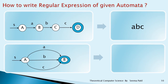Two states A and B with three input values A, B, C given in parallel fashion: whenever inputs are given in parallel fashion, you attach a plus sign. So here you write A + B + C.